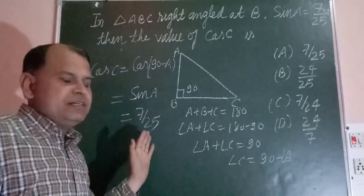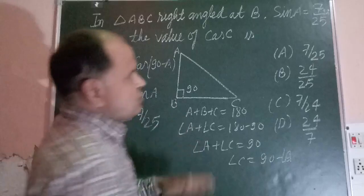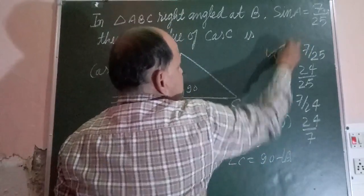Therefore, the value of cos C equals the value of sin A, which is 7/25. So the answer to this question is A: 7/25.